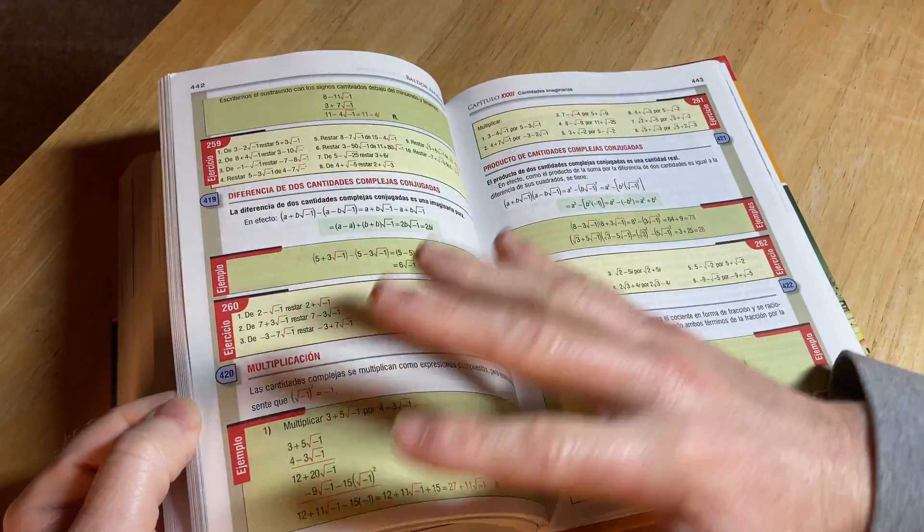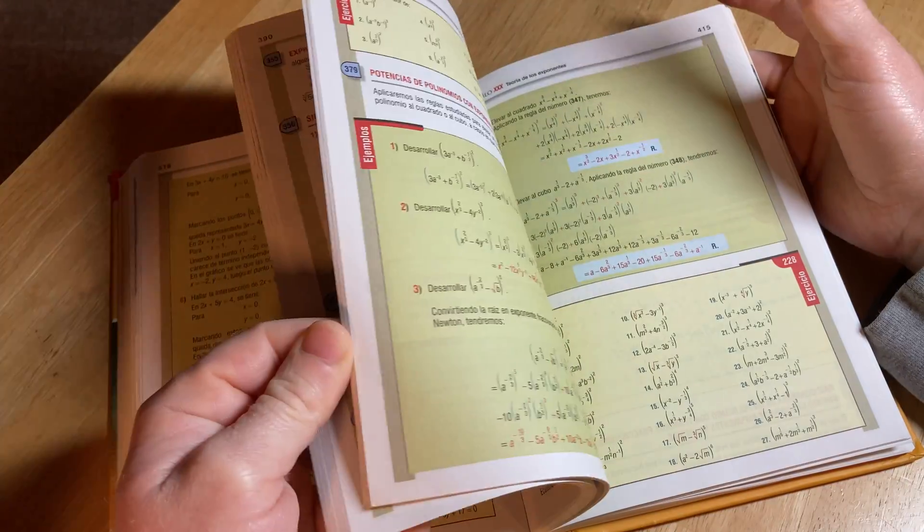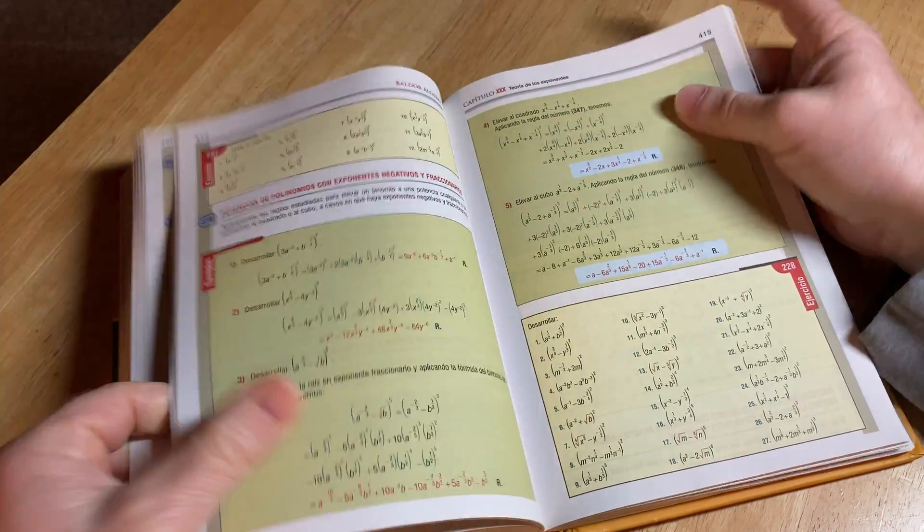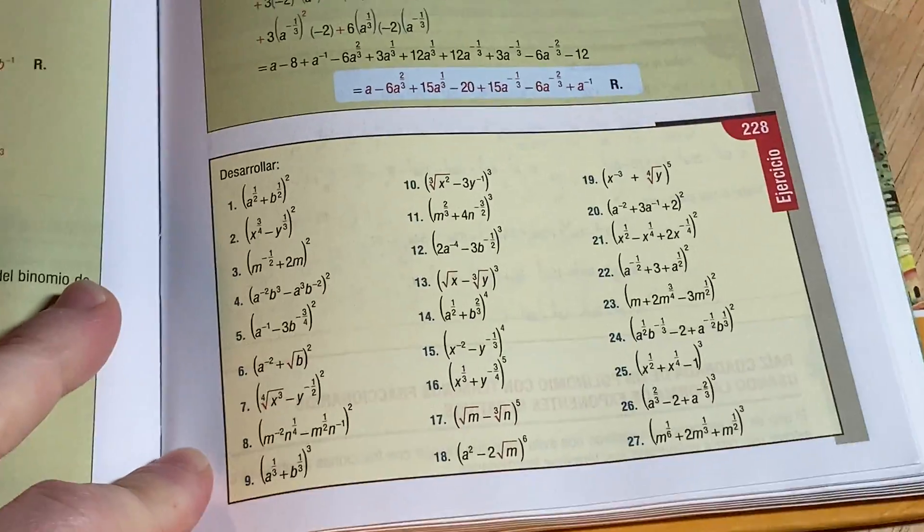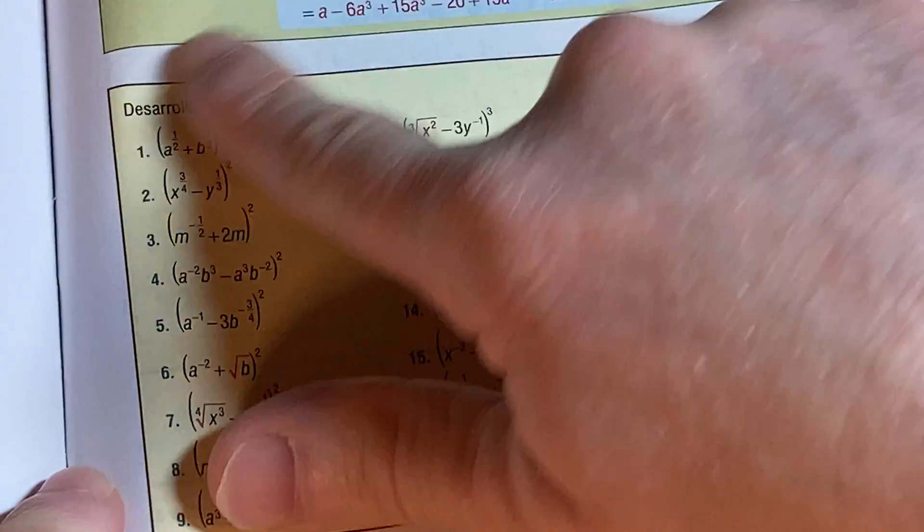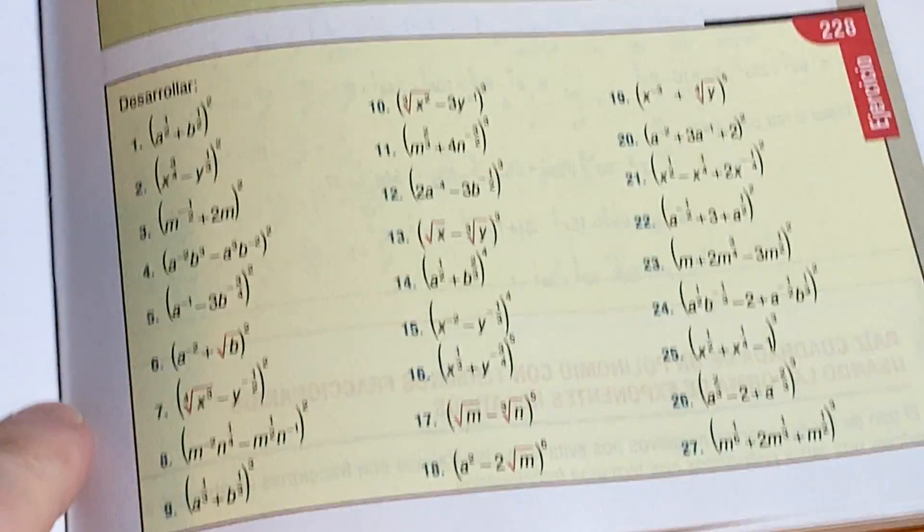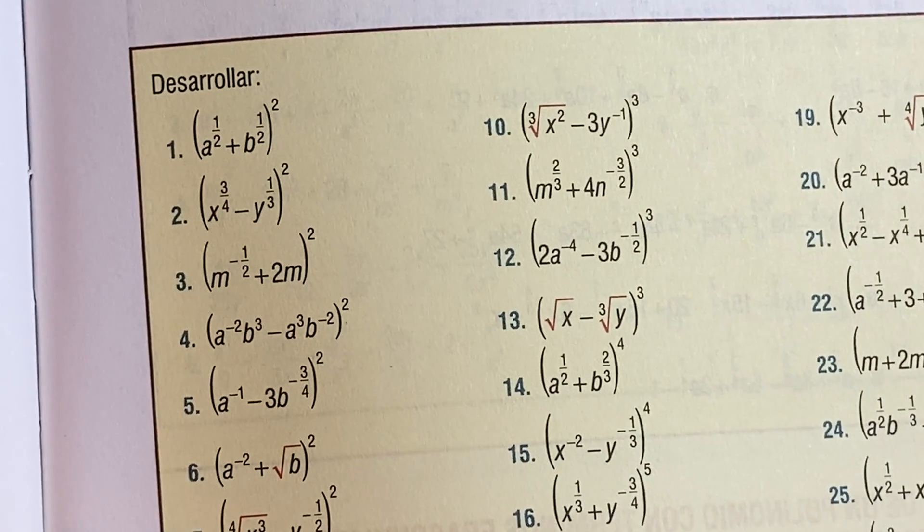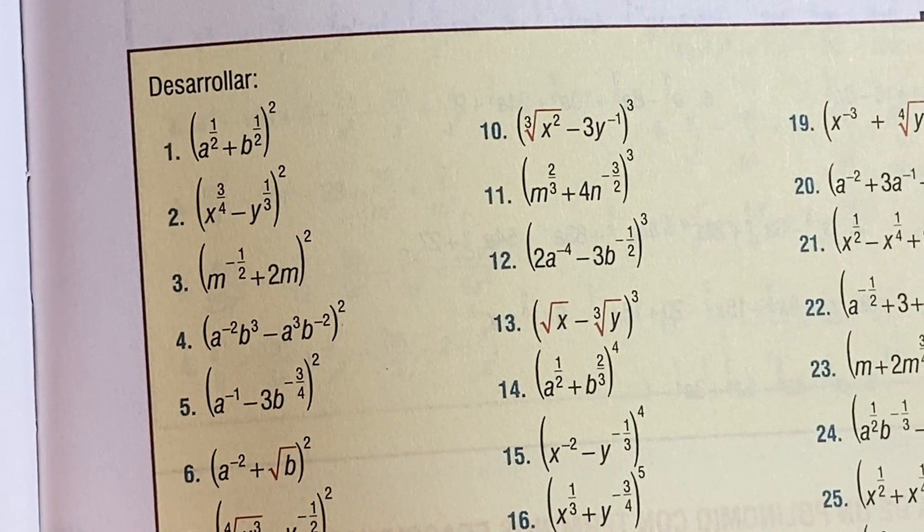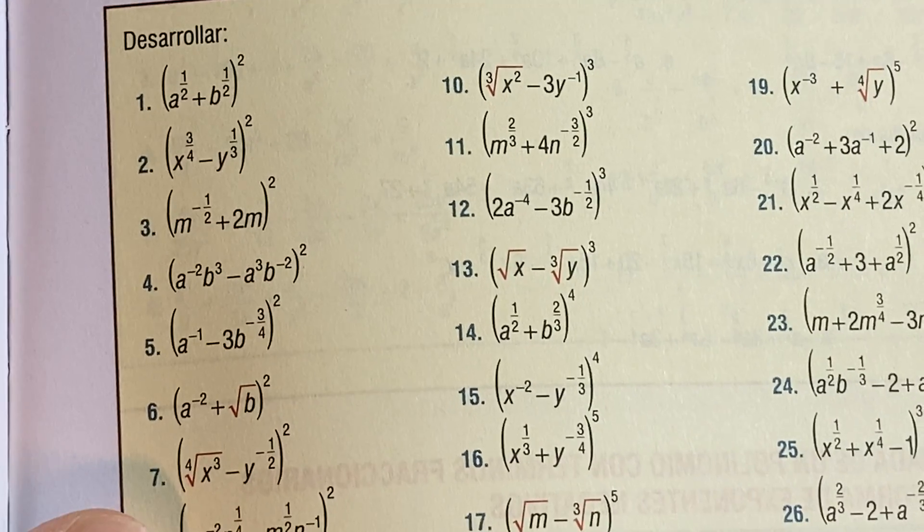But the book has really hard problems. Let me just show you what I mean by hard. So, here's an example. In this exercise set, it says Desarrollar. Right, yes, it's another language, I know. We'll get to that. So you basically have to expand these. Not so bad.